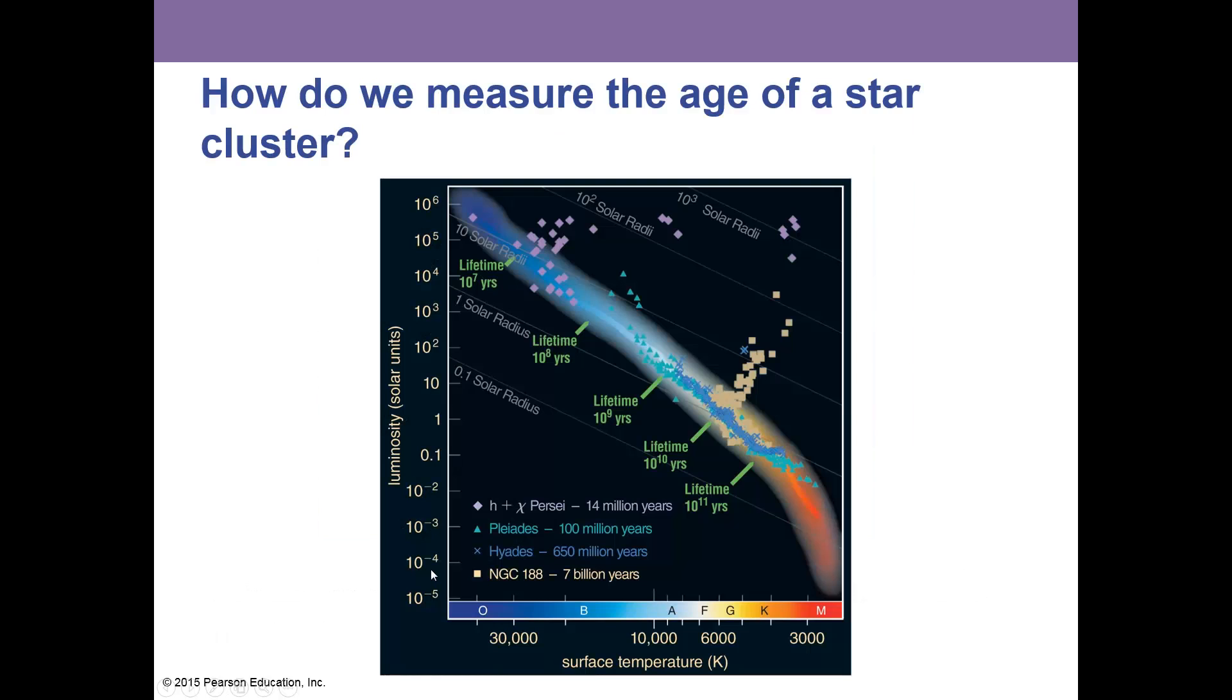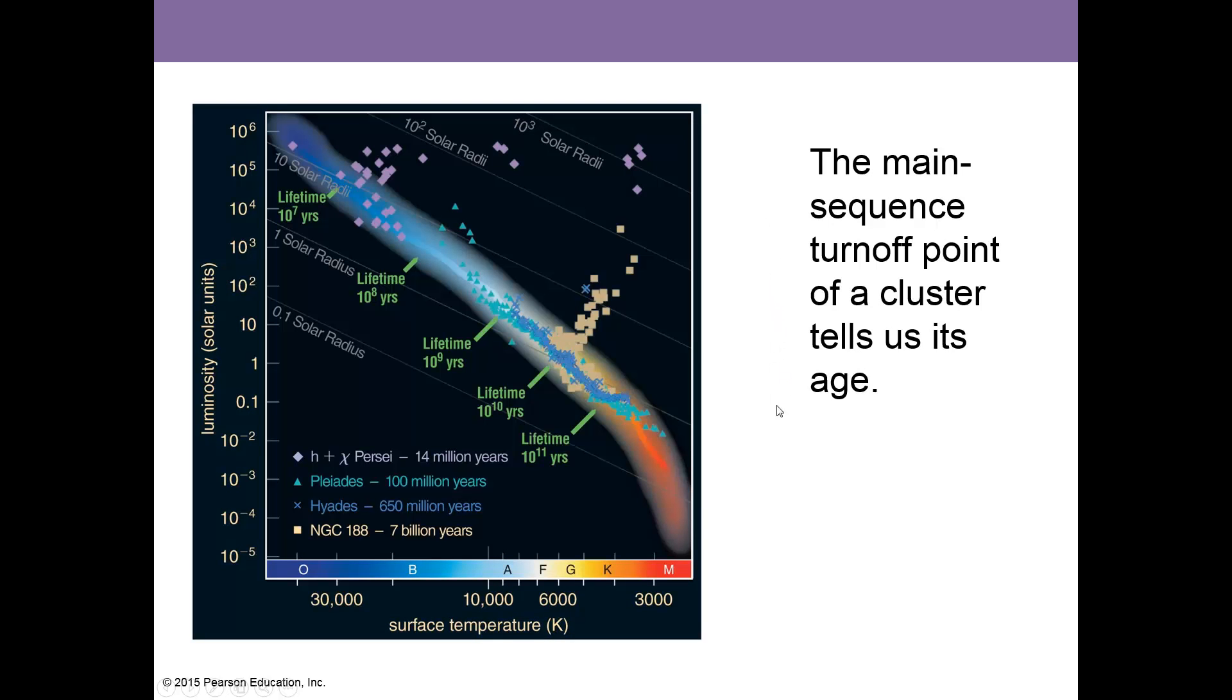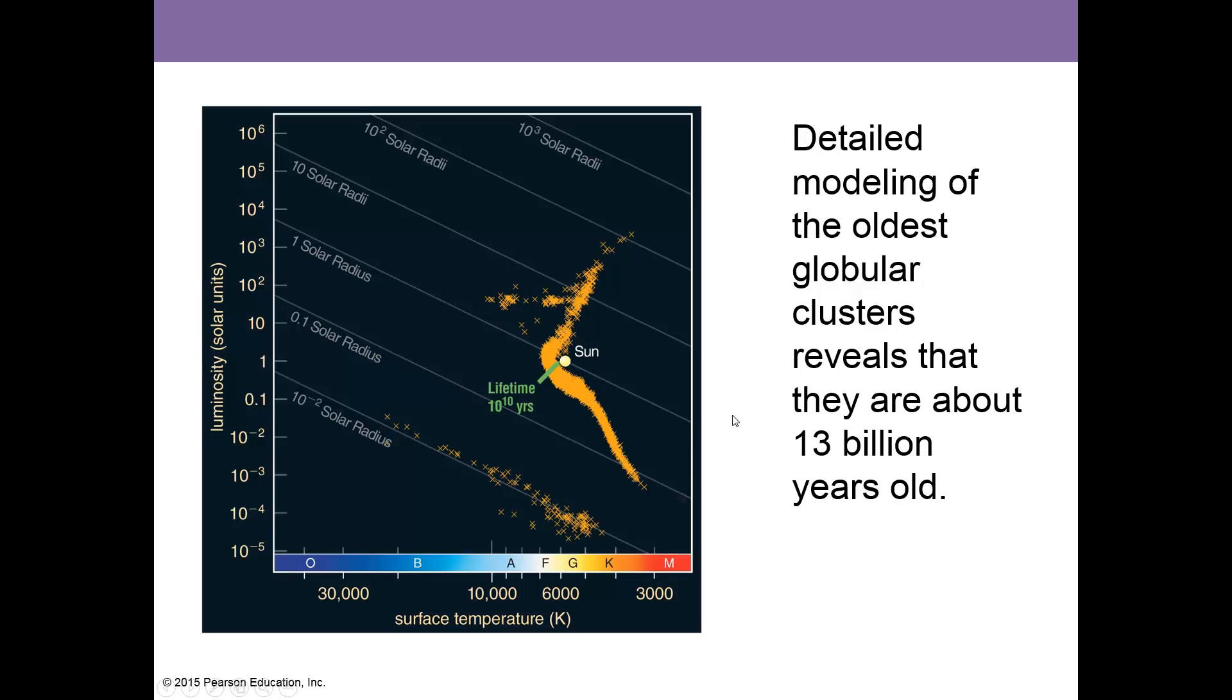How do we measure the age of a star cluster? We have to look at where these stars turn off the main sequence—it's called the main sequence turnoff. The Pleiades now have no stars with a life expectancy less than a hundred million years. The main sequence turnoff point of a cluster tells us its age. These stars here are going to be older than these stars up here where they turn off the main sequence. To determine the accurate ages, we compare models of stellar evolution to the cluster data. This is an ongoing thing all the time. Detailed modeling of the oldest globular clusters reveals that they are about 13 billion years old. This is what a globular cluster would look like on the HR diagram—they would turn off right here.